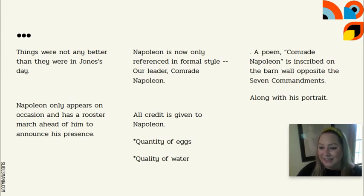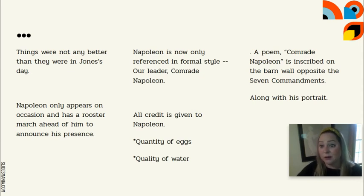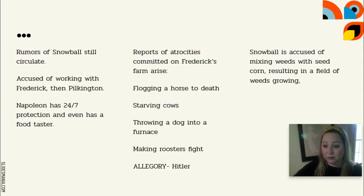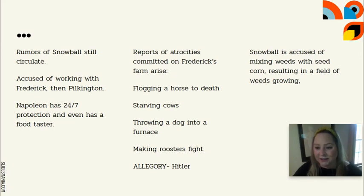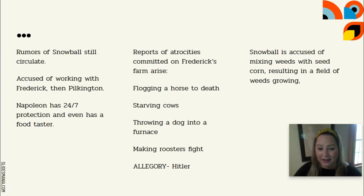The poem is written on the opposite wall of the barn from the seven commandments, and Napoleon's picture is hung next to it. There are still rumors of Snowball circulating. Napoleon has been in negotiations with neighboring farms — Frederick and Pilkington — and whichever one Napoleon is not favoring at that moment is where Snowball is accused of residing and causing mischief.